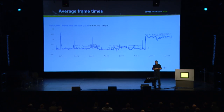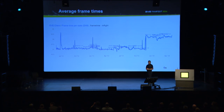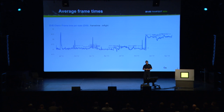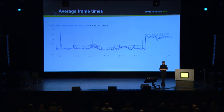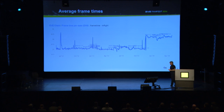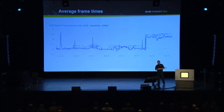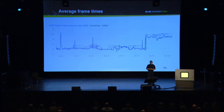We also have an aggregate of average frame times — and I should note these are frame times, not frames per second, so a lower number is better. We use this graph as a good indicator of the overall performance health of the EVE client. Interestingly, there are these huge spikes on the frame times that seem to correspond with large fleet fights in EVE — if you have thousands of people with thousands of ships in the scene, everybody's suddenly reporting a much worse frame rate.